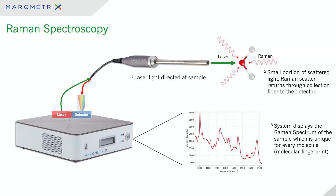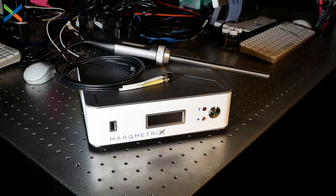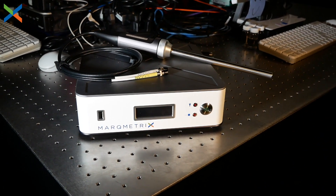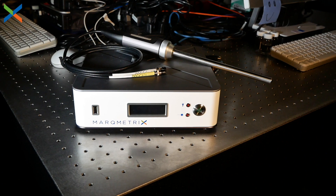With different molecules vibrating at different frequencies or different energies, we can generate a spectrum — a series of lines in very specific places that indicate what a molecule is. The intensity of those bands also allows us to determine concentration. Traditionally, Raman has always been very science-oriented: lab equipment that's finicky and requires scientists attached to the hardware. One of the things we set out to do at Markmetrics is take the scientist out of the science, building solid-state, incredibly stable hardware that we can think of more as a sensor than an instrument.